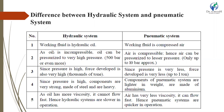In a hydraulic system, since oil is incompressible, it can be pressurized to very high pressure — up to 500 bar or even more. Air is compressible, hence it can be pressurized to a lesser pressure of only about 10 bar approximately. In a hydraulic system, since pressure is high, the force developed is also very high — thousands of tons. In a pneumatic system, since pressure is low, the force developed is very less — up to 1 ton. Hydraulic system components are made of strong steel and are heavy.